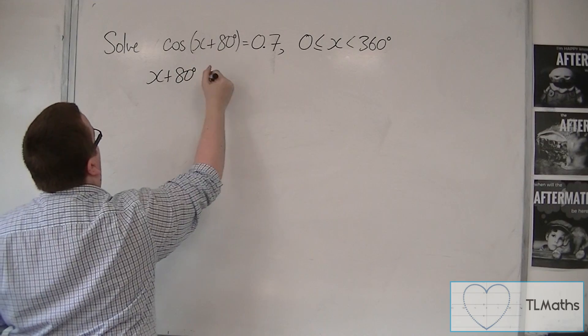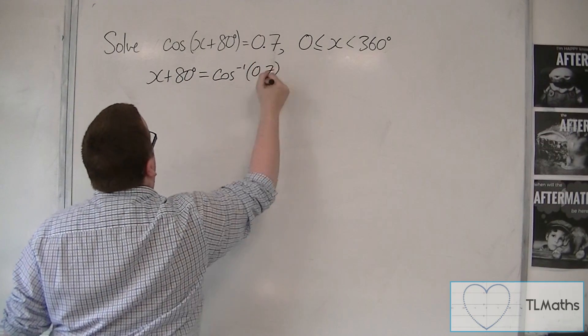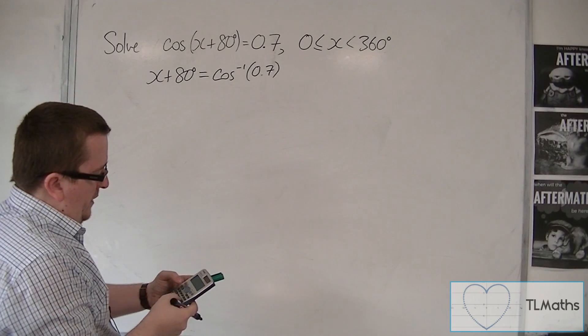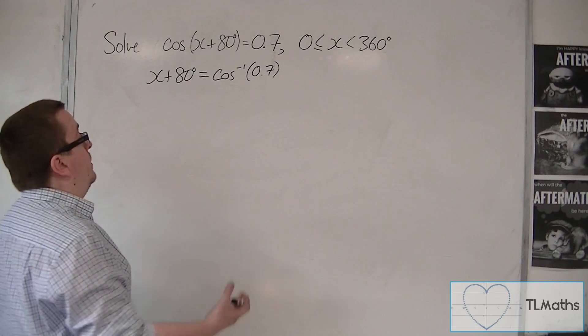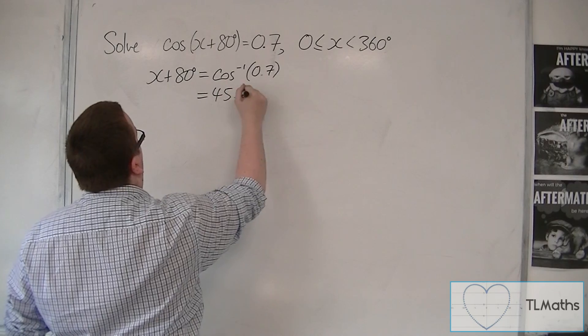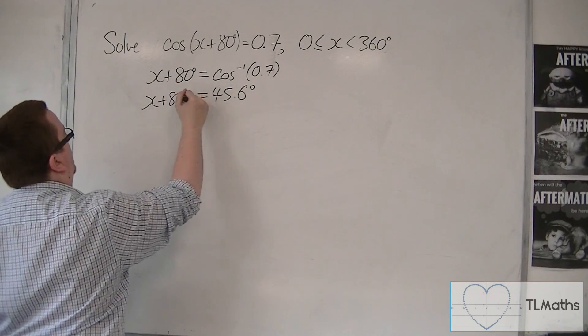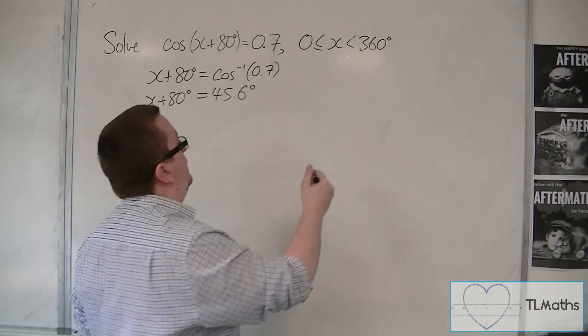So x plus 80 degrees is the inverse cos of 0.7. I make sure my calculator is in degrees. Inverse cos of 0.7 is 45.6 degrees. That gives me one solution to the original problem of cos x equals 0.7.